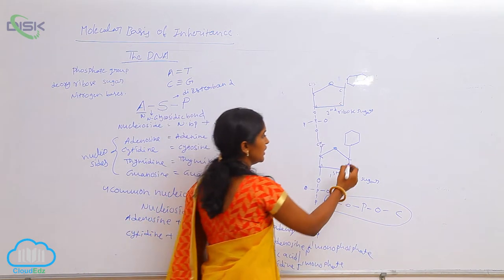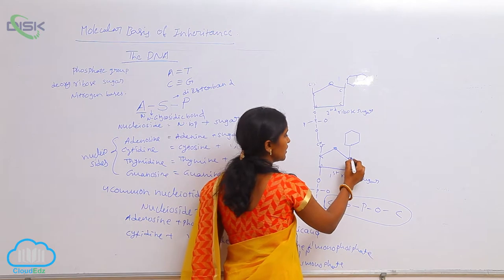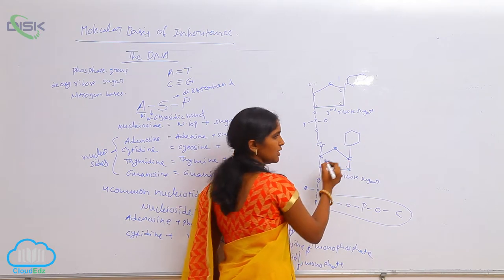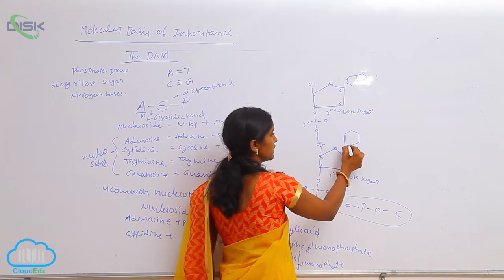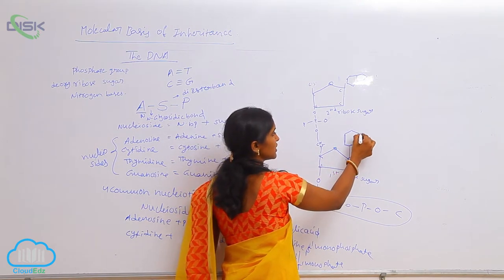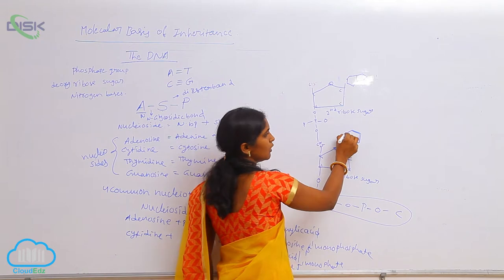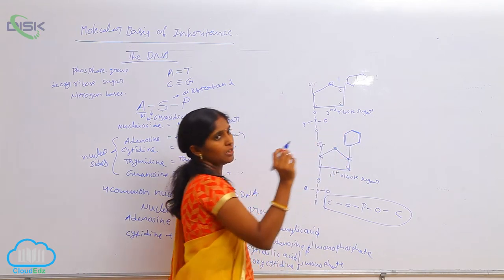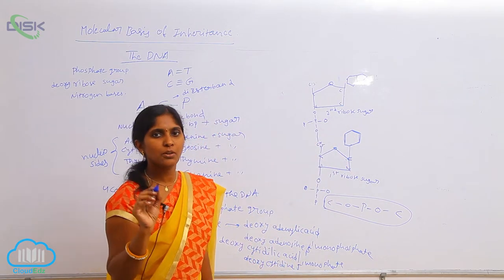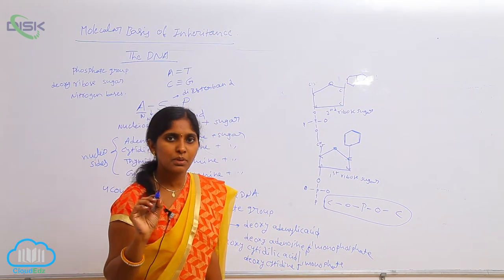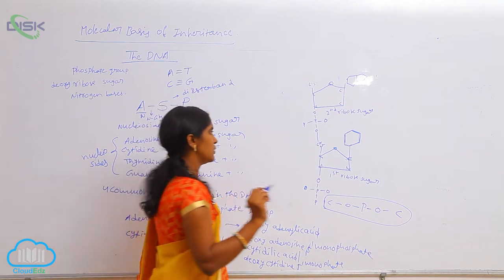At the first carbon of the deoxyribose sugar, the base pairs are attached. The combination of the sugar and nitrogen base pair makes a nucleoside.